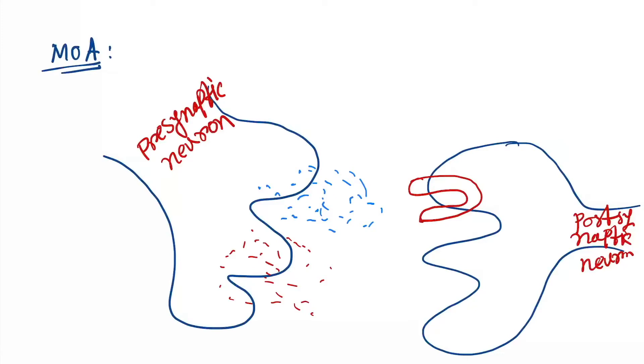This receptor is called the mu receptor. Serotonin comes and binds to the mu receptor, and by this process, neuronal transmission occurs to the next neuron.